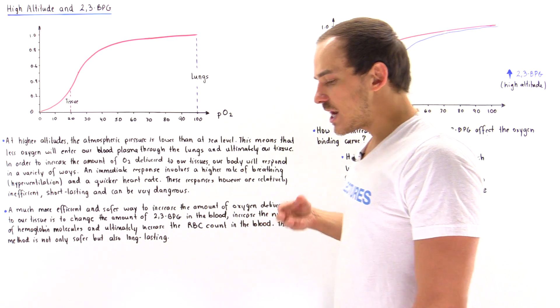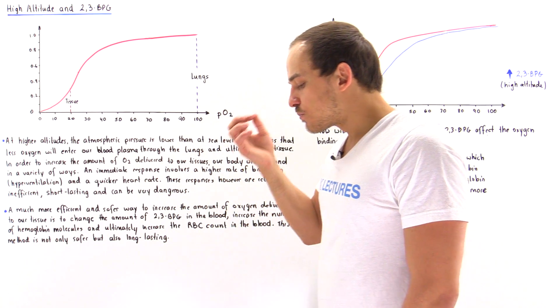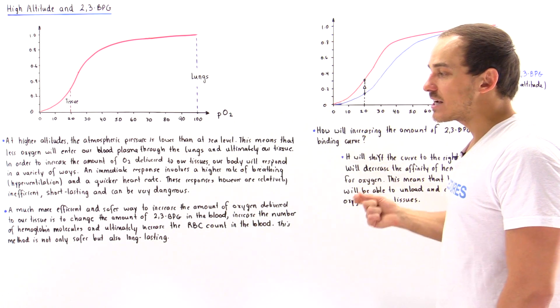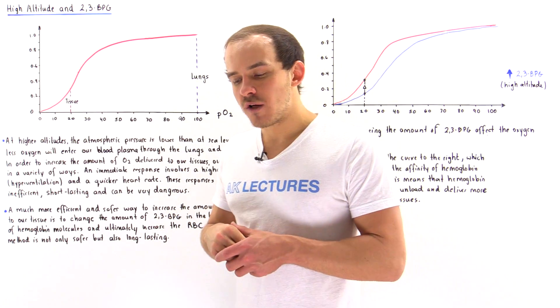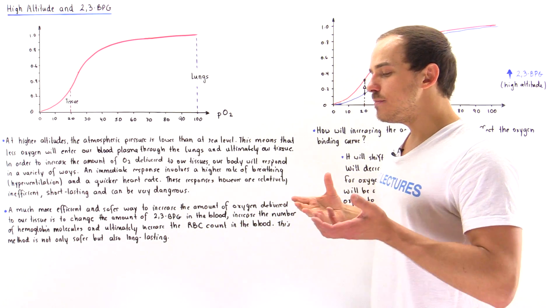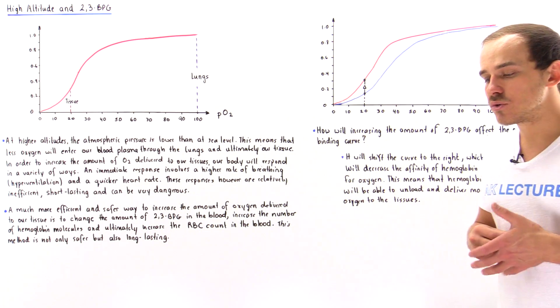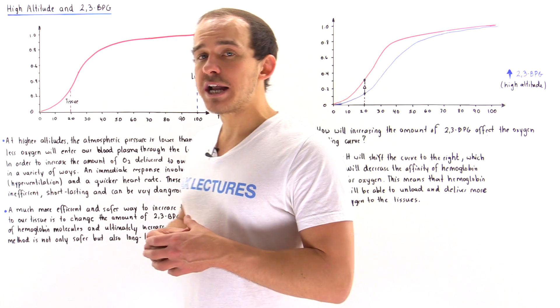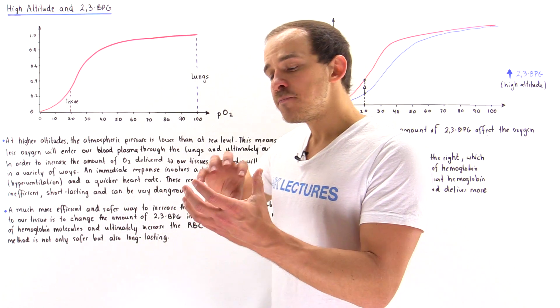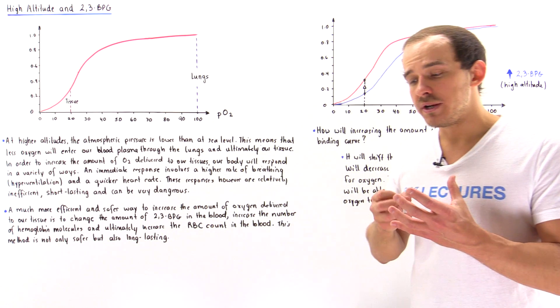The question that I want to answer in this lecture is why does our body actually want to increase the number of 2,3-BPG molecules? Recall that 2,3-BPG, 2,3-bisphosphoglycerate, are allosteric effectors of hemoglobin, and what that means is they can bind into the center pocket found in hemoglobin.